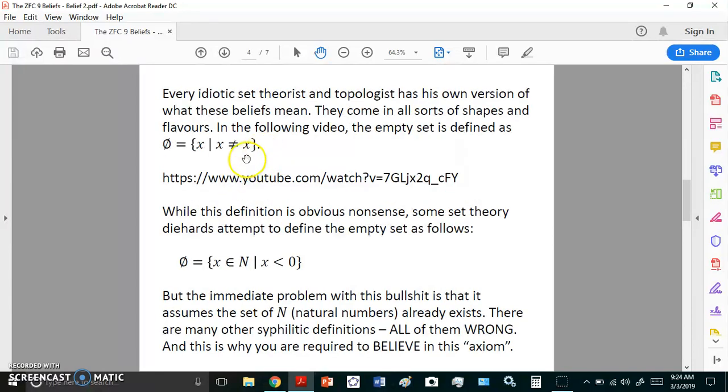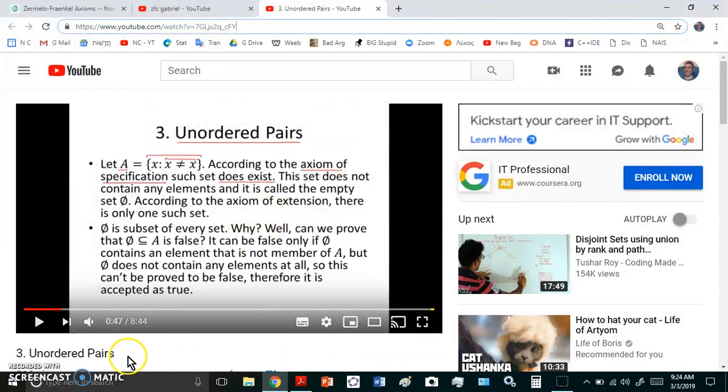Every idiotic set theorist and topologist has his own version of what these beliefs mean. They come in all sorts of shapes and flavors. If you look at this particular video, and I have it over here, this guy who calls himself machine learning god. By the way, there is no such thing as AI. Advanced automation is what the idiot programmers call AI. It's not AI, and there won't be AI for the next not even 10,000 years if we're still around. AI is a myth, and there is a huge difference between that and advanced automation. Artificial intelligence is just a catchphrase or a marketing phrase.